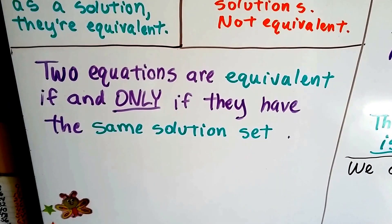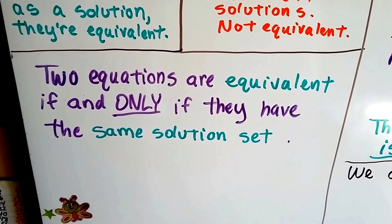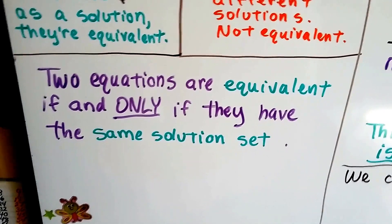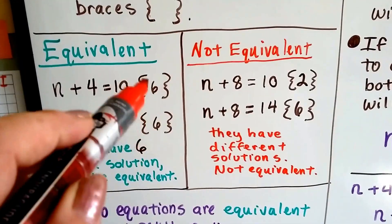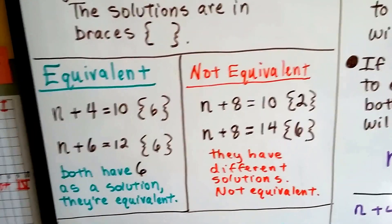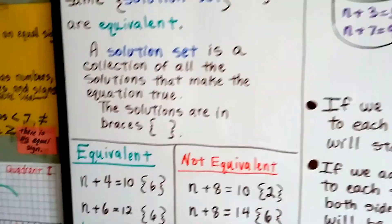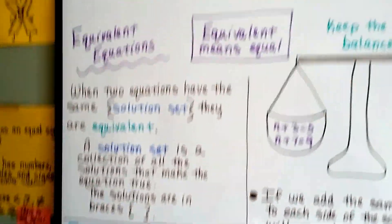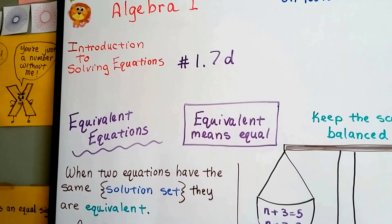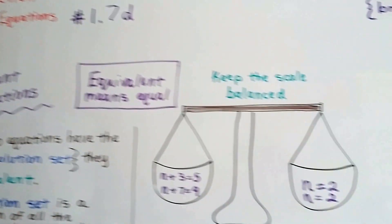Two equations are equivalent if and only if they have the same solution set. Remember, we put the solutions inside these braces, that's called the solution set. If you're really confused about solution sets, then you want to go back to 1.7c.